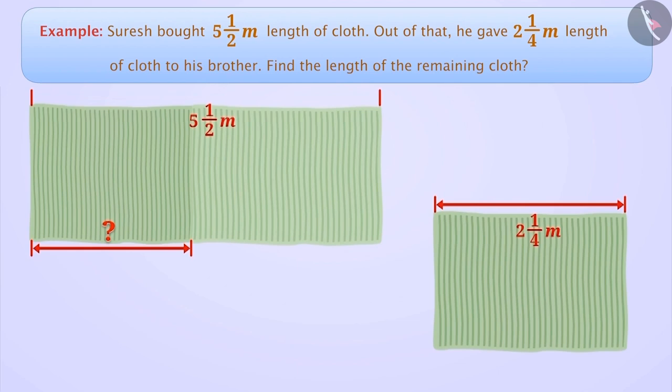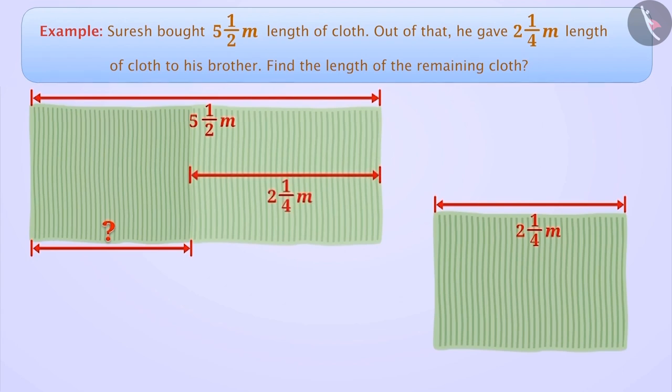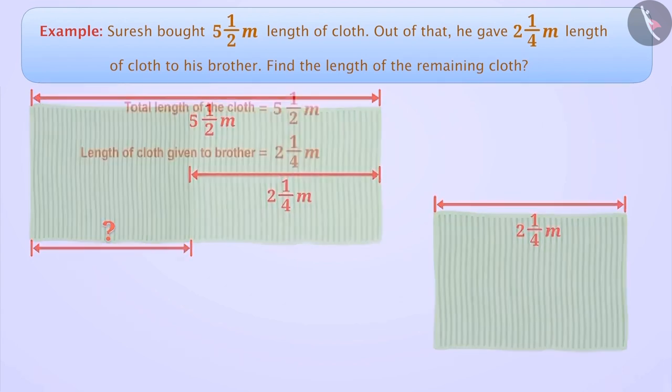The total length of the cloth purchased is 5.5 meters. Of that, Suresh gave a piece of 2.25 meter length to his brother. This means 2.25 meter long piece was taken out of this cloth.